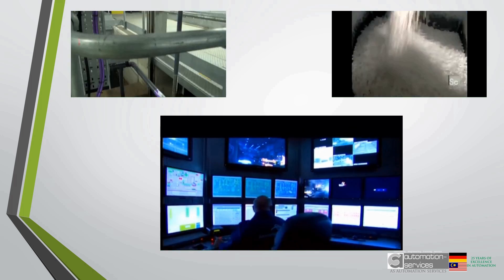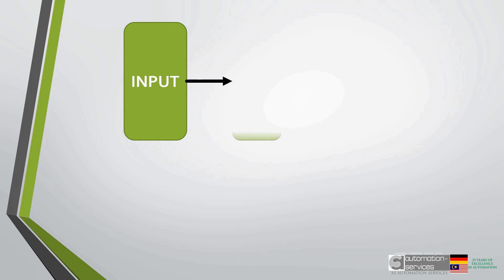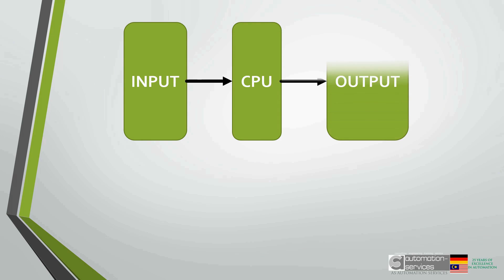Every PLC is composed of 3 main parts: input, CPU, and output.